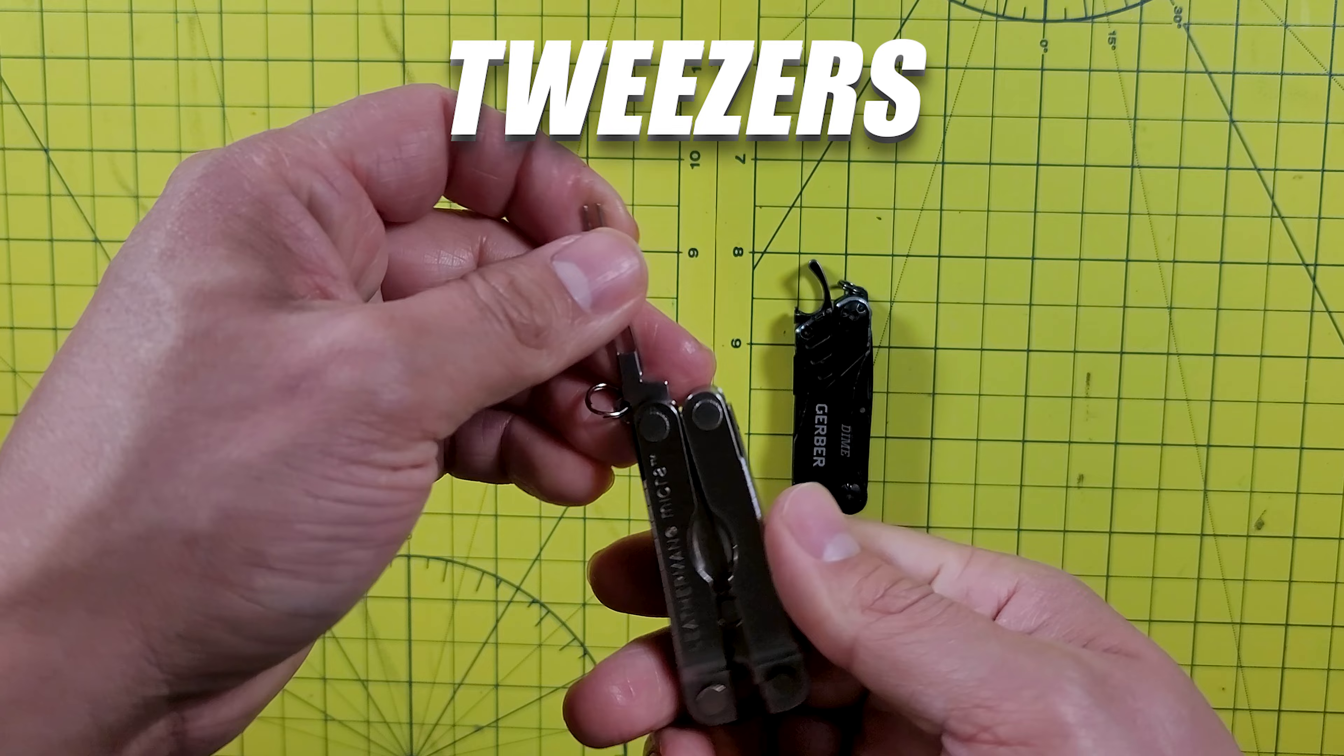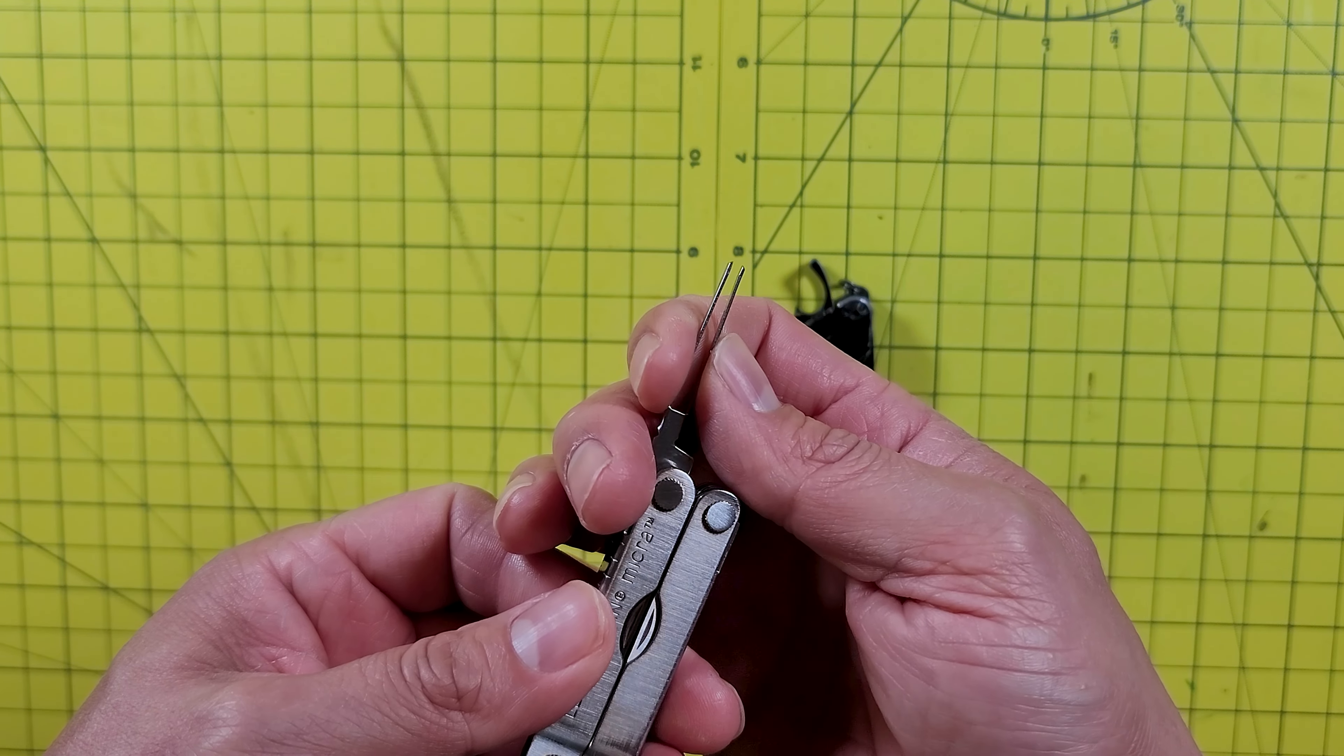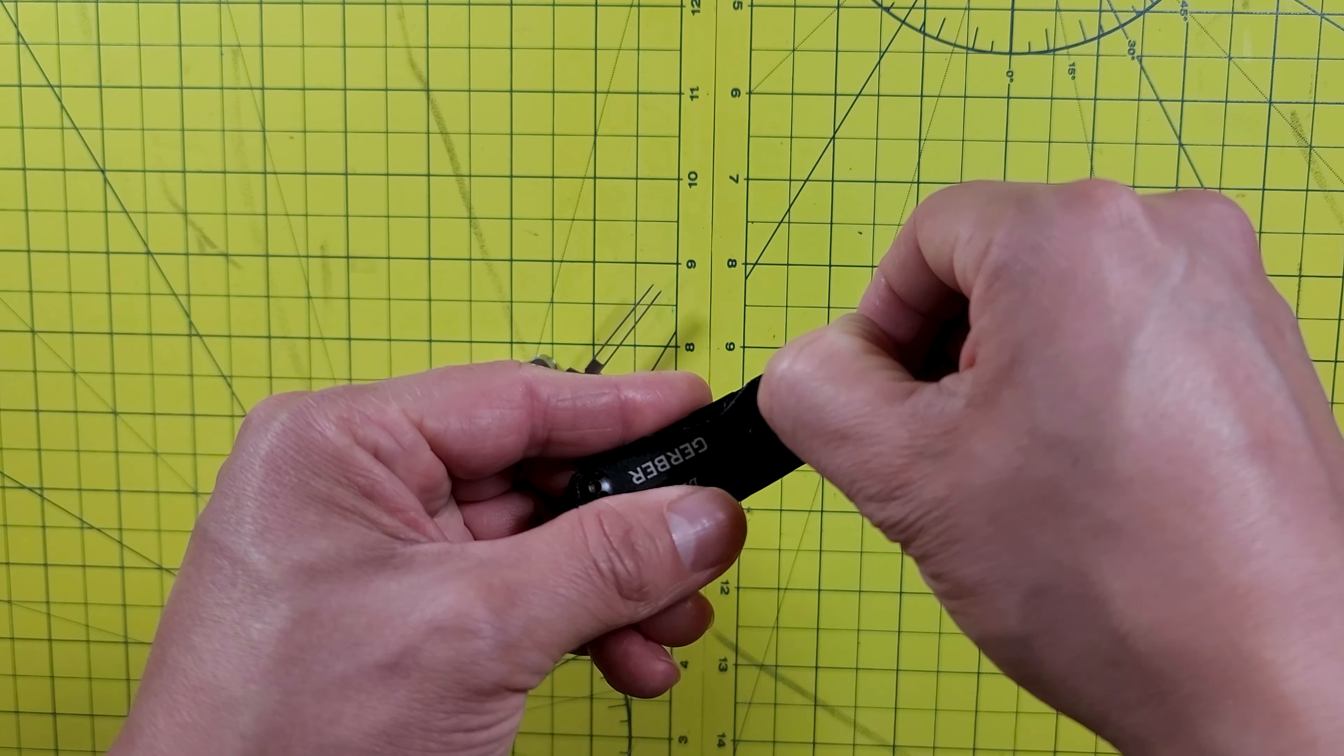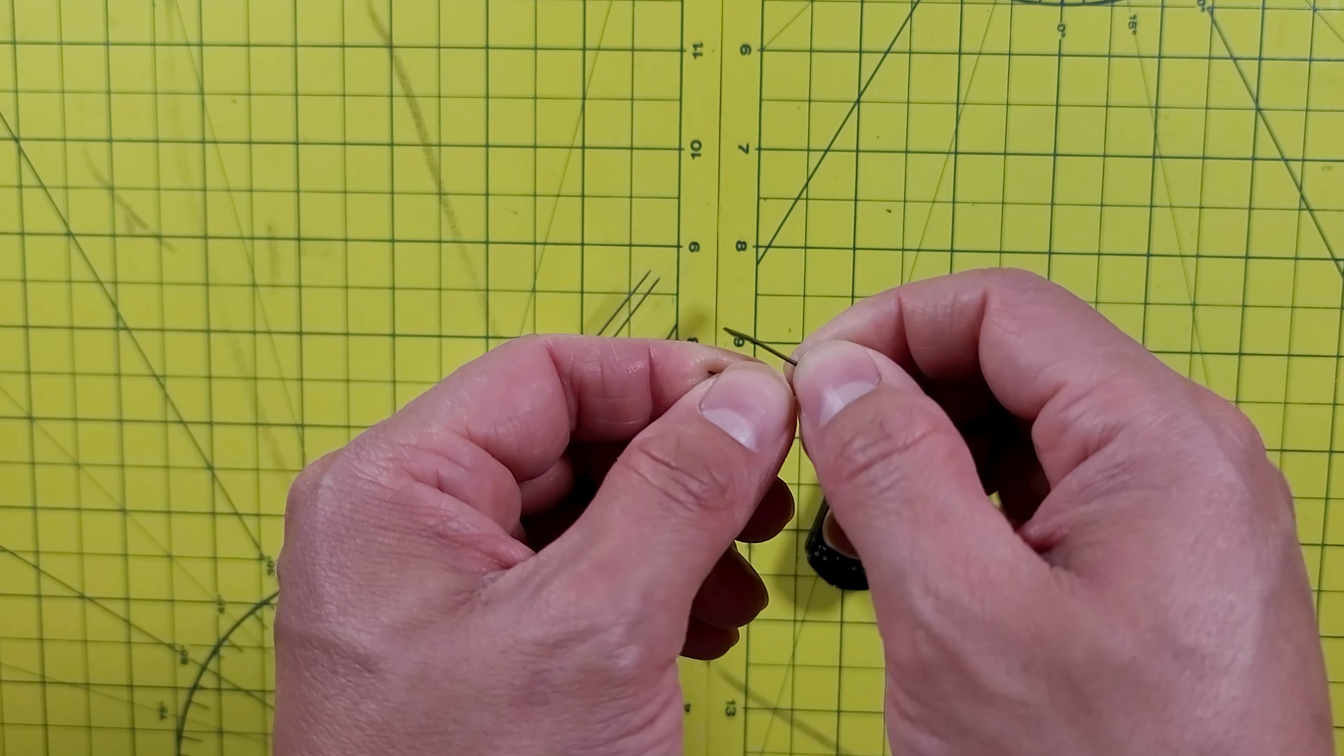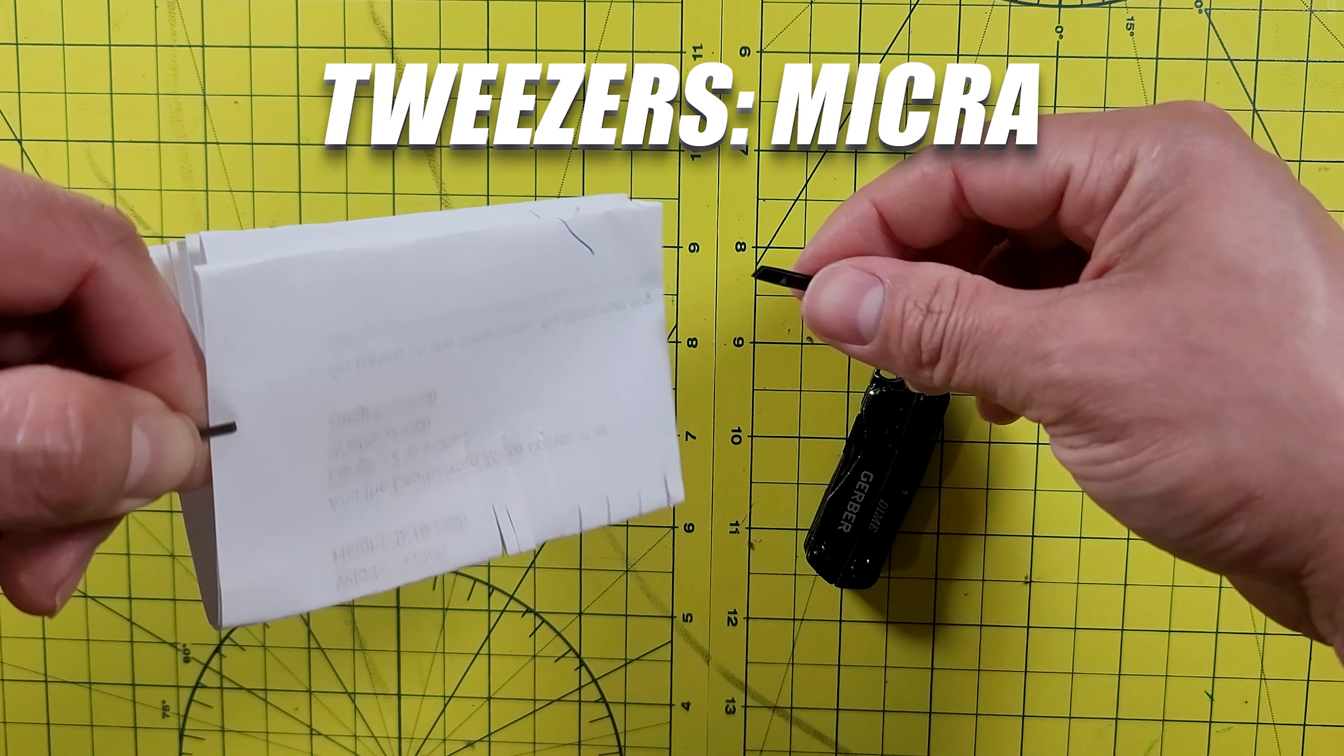Next you have the tweezers. The tweezers on the Micro are thicker and have a better grip in my opinion. The only thing is that the tweezers on the Micro are attached to the tool itself and cannot be removed, whereas the ones on the Dime are not attached to the tool. They're 100% removable, but I feel that the tweezers on the Dime are flimsier and easier to bend as well. So I would definitely give the win to the Micro.